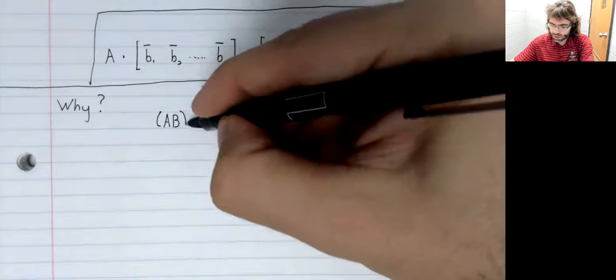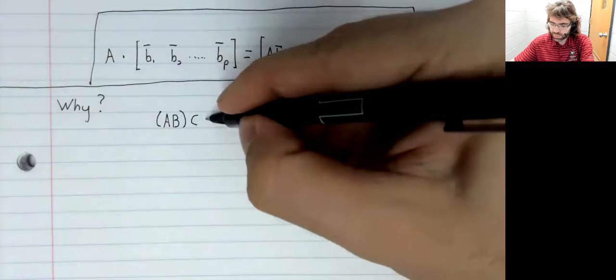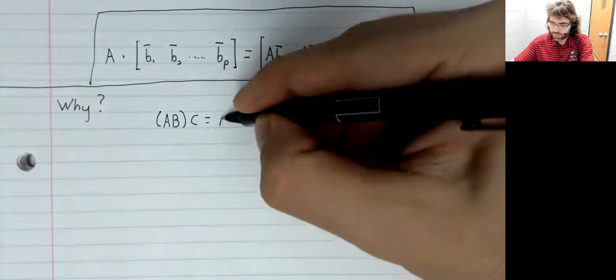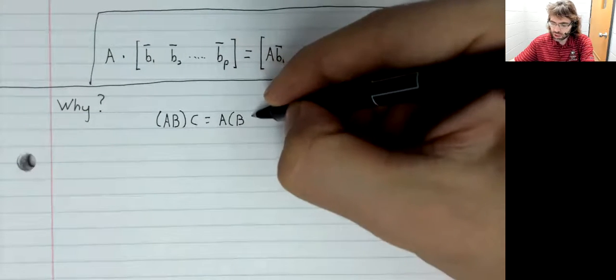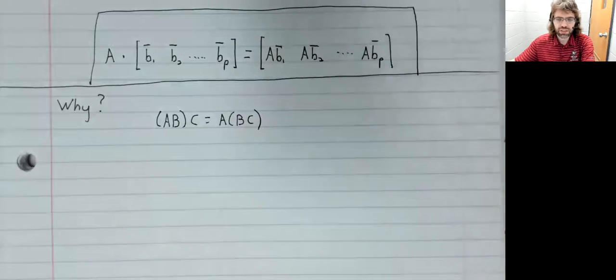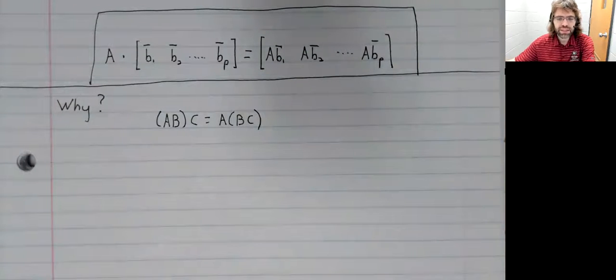We really want multiplication to be associative. That is to say, if we have three matrices multiplied together, we desperately want for it not to matter where the parentheses go.